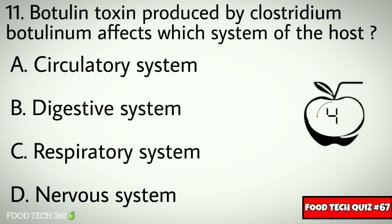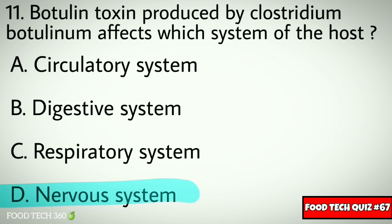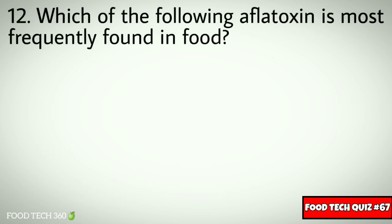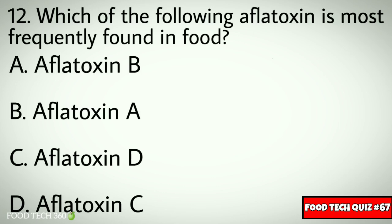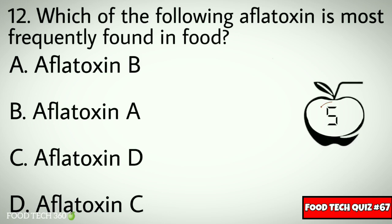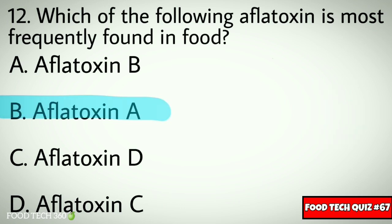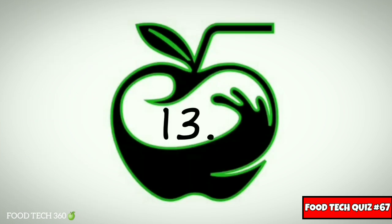Correct answer: D) nervous system. Question number twelve: which of the following aflatoxins is most frequently found in food? Options: A) aflatoxin B, B) aflatoxin A, C) aflatoxin D, D) aflatoxin C. Correct answer: B) aflatoxin A.